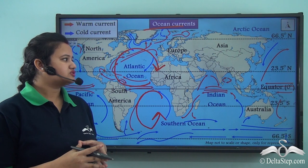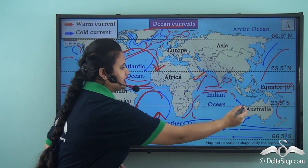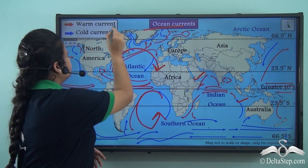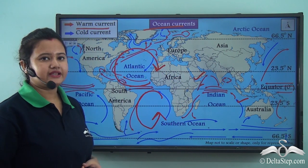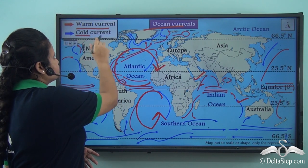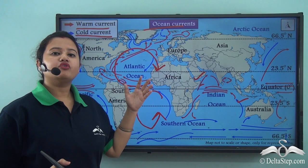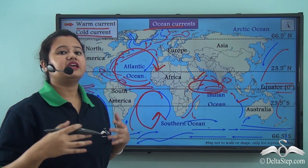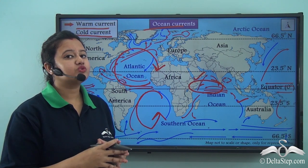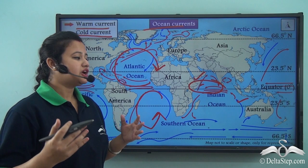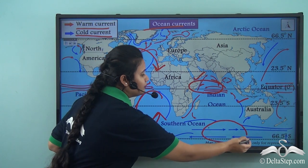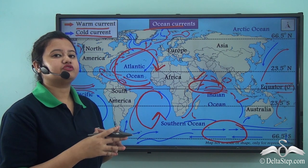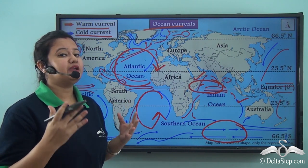In this map you can also find some red curves and some blue curves. The red curves refer to warm ocean currents, whereas the blue lines refer to cold ocean currents. Warm ocean currents originate in the tropical region and usually raise the temperature of coastal regions, whereas cold ocean currents originate in the polar regions.